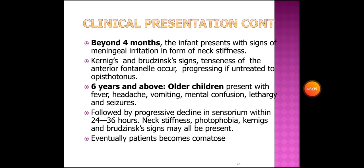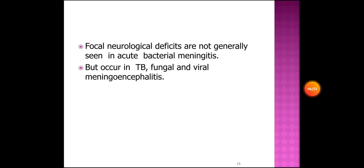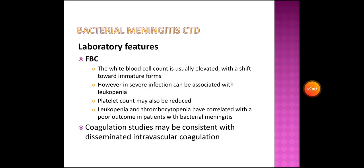In children six years and above, they present with fever, headache, vomiting, mental confusion, lethargy, and seizures, followed by progressive decline in sensorium within 24 to 36 hours. Neck stiffness, photophobia, Kernig's and Brudzinski's signs may all be present. Eventually patients become comatose. Focal neurological deficits are not generally seen in acute bacterial meningitis but occur in TB, fungal, and viral meningitis.